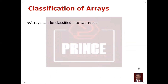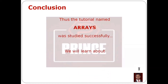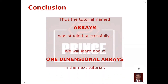The next topic is the classification of arrays. Arrays can be classified into two types: one is the single-dimensional array (or one-dimensional array), and the second type is the multi-dimensional array — such as a two-dimensional array, three-dimensional array, and n-dimensional array. The two-dimensional array is used for matrix programs. In this tutorial, we are looking at the single-dimensional array. The next tutorial will cover the one-dimensional array in detail.